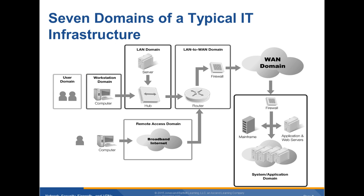The seven domains of a typical IT infrastructure, which we learned in the Fundamentals of Information Security course. The user domain refers to actual users, whether they are employees, consultants, contractors, or other third-party users. Any user who accesses or uses the organization's IT infrastructure must review and sign an acceptable use policy, or AUP, prior to being granted access to the organization's IT resources and infrastructure.